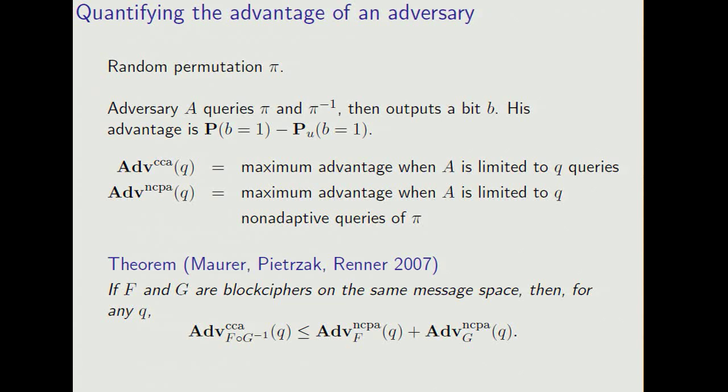Now in our context, swap-or-not has the same distribution as its inverse. So this says that we can lift from NCPA security to CCA security, provided that we simply double the number of rounds.